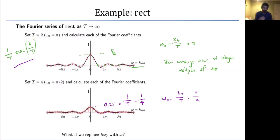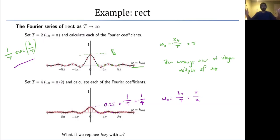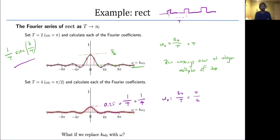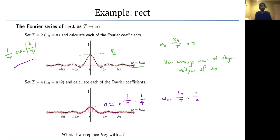Beyond height scaling, what's really important is the sampling rate. The further apart signals are in time — the longer the period in the time domain — the closer the frequency samples are spaced. If we increase the spacing between rect functions in time, we sample frequencies much more finely. In general, if we replace k·ω₀ with a continuous independent variable ω, we can have arbitrary fine sampling of frequencies.